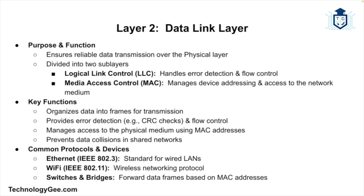Common protocols and devices at the Data Link layer include Ethernet (IEEE 802.3), Wi-Fi (IEEE 802.11), and switches and bridges. For the exam, understand how MAC addresses function and the role of switches in forwarding frames based on these addresses. Additionally, grasp the concept of VLANs and how they segment networks at this layer.